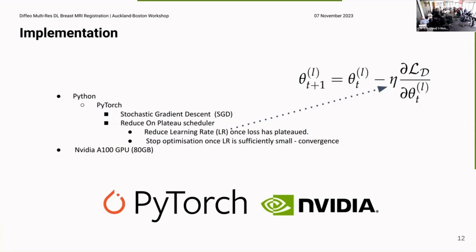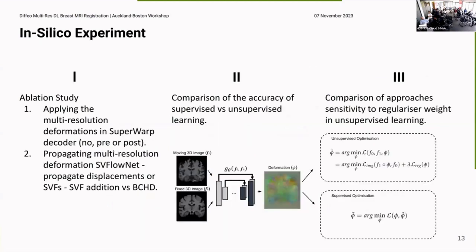So the implementation of this is training using stochastic gradient descent and we have a learning rate scheduler that's based on a plateau criteria. We stop optimizing once the learning rate is sufficiently small, it's converged, and we use an NVIDIA A100 GPU on our HPCs. So first of all, I do an ablation study to figure out what's working. I do an ablation study using SuperWarp and there's different ways that you can take these multi-resolution displacement fields and apply them to your features. You can just not apply them, you can apply them before you pass into the next block or after you pass into the next block. Then we also look at different ways of propagating multi-resolution deformations. One using this addition that I've talked about and the other using this Baker-Campbell-Hausdorff formula.